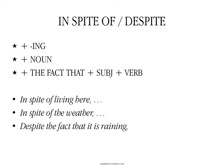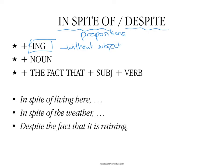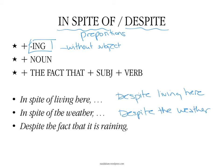We're going to see now how to use the prepositions 'in spite of' or 'despite.' Because these words are prepositions, after them you can only use a verb in the -ing form without a subject — only the verb — or a noun group. For example, you could say things such as: in spite of living here, or in spite of the weather. If you want to use 'despite,' you could say: despite living here, or despite the weather. These are basically the only two options after 'despite' or 'in spite of': a verb in the -ing with no subject, or a noun group.